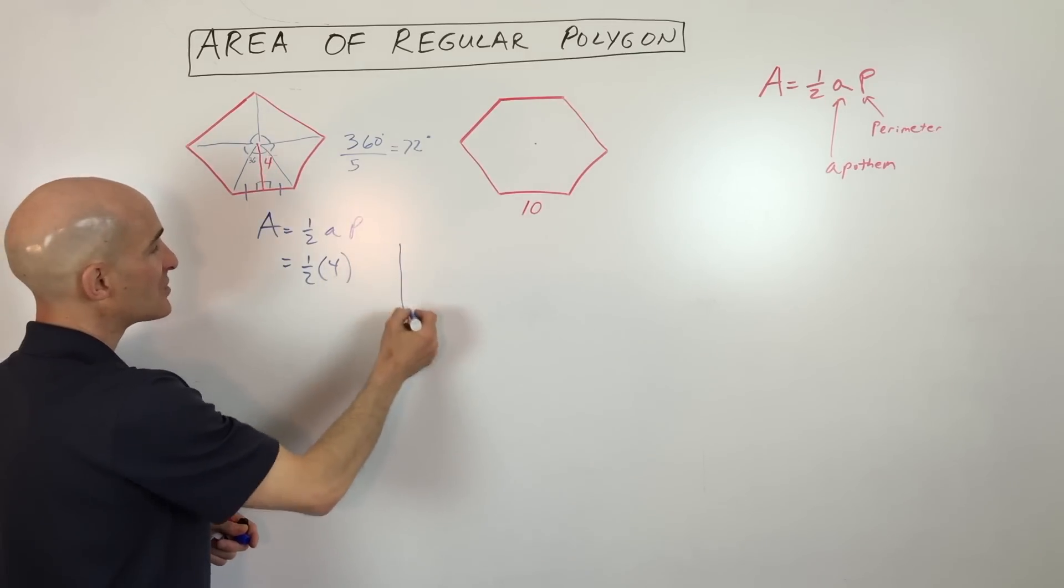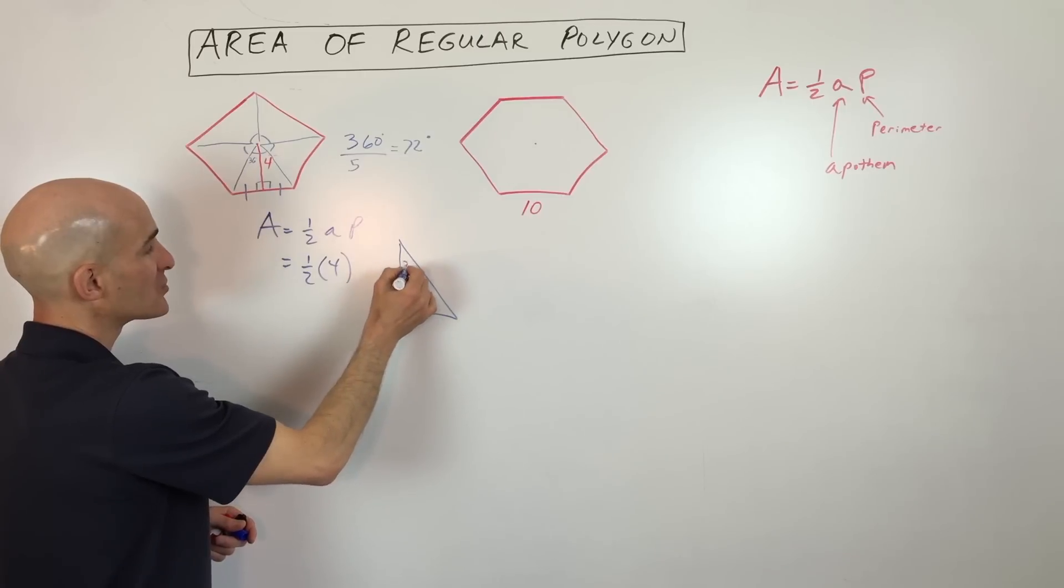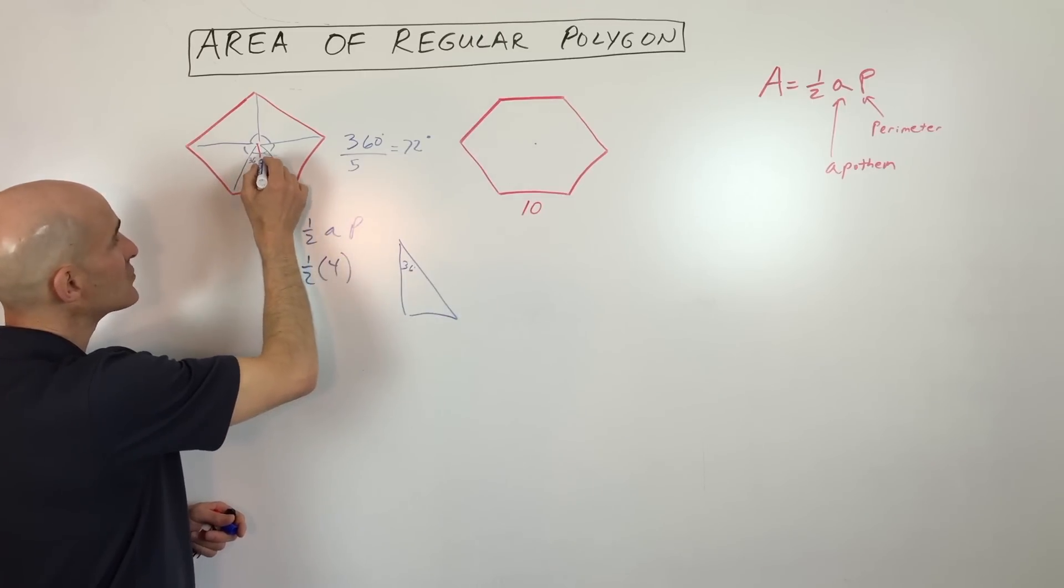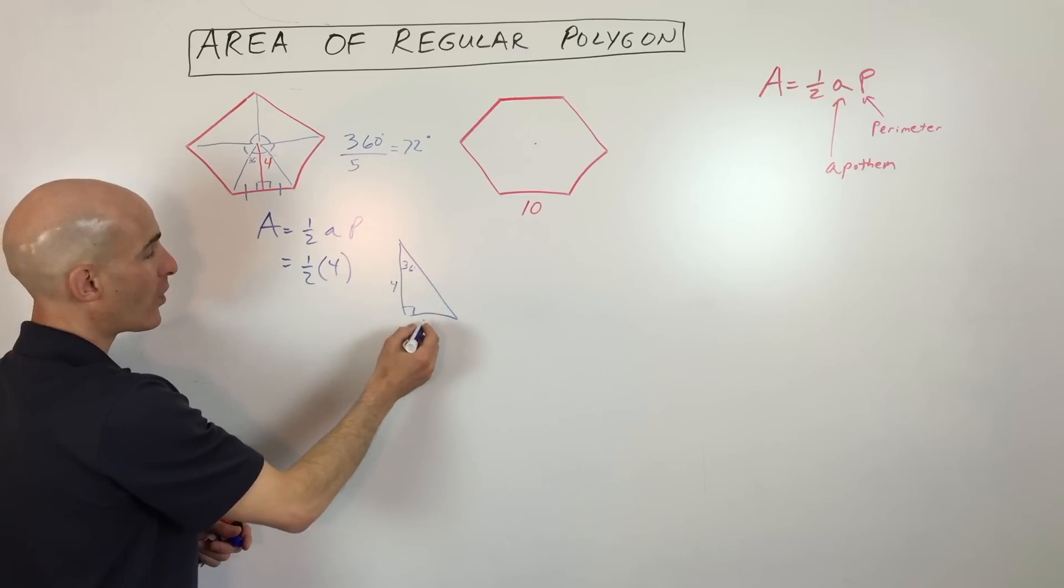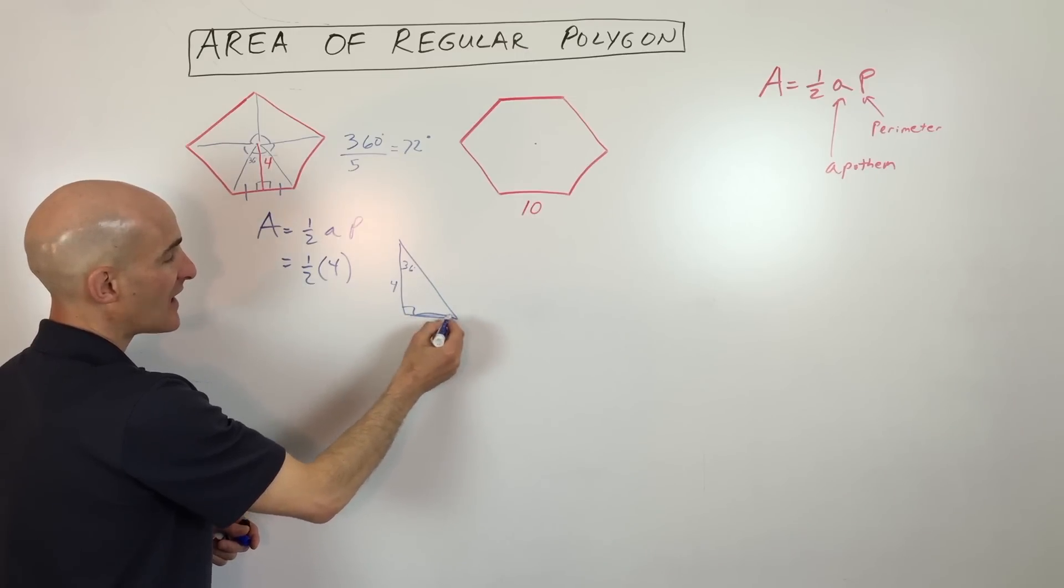So I'll just bring that triangle out here, so it's a little bit bigger, so we can see it. That's 36 right there. This is a right angle. This is four, and we want to find out what this side is here. Let's just call it x.